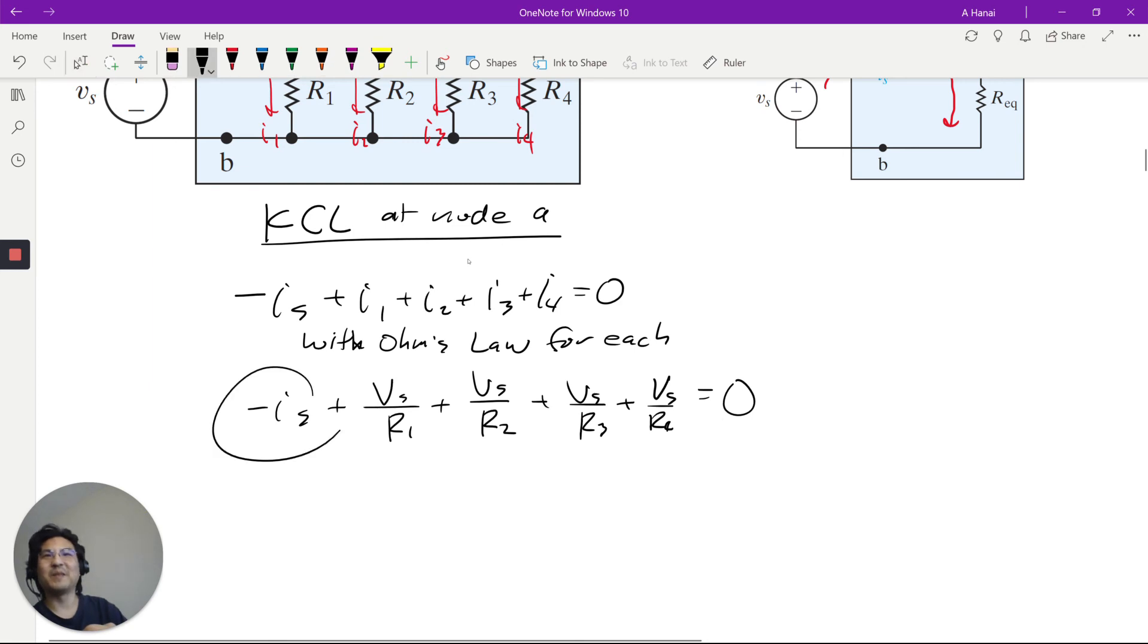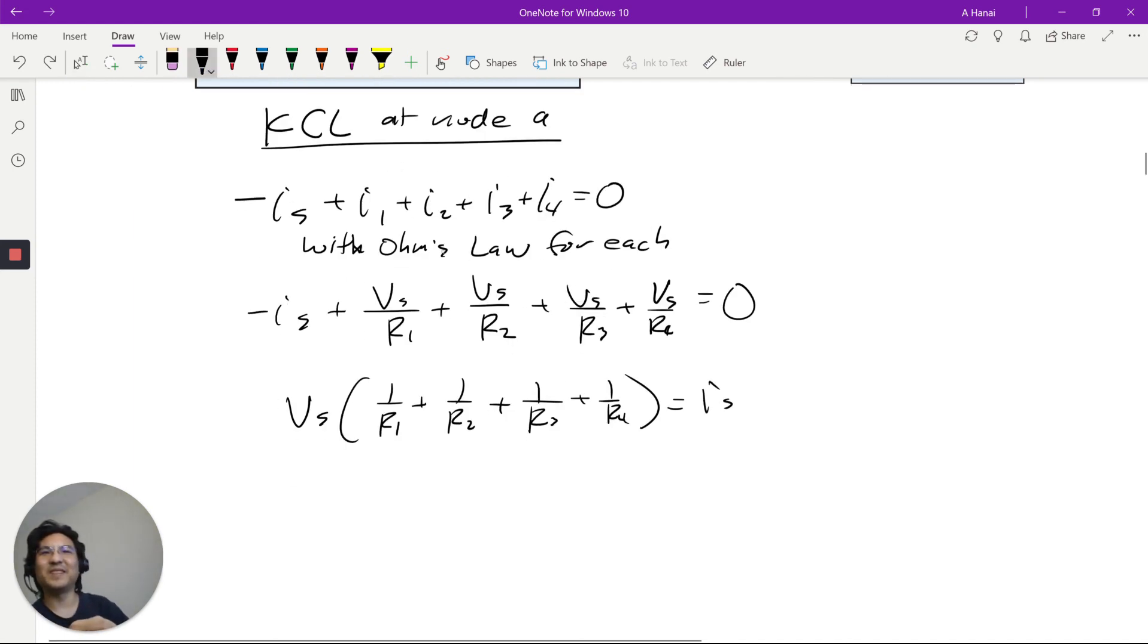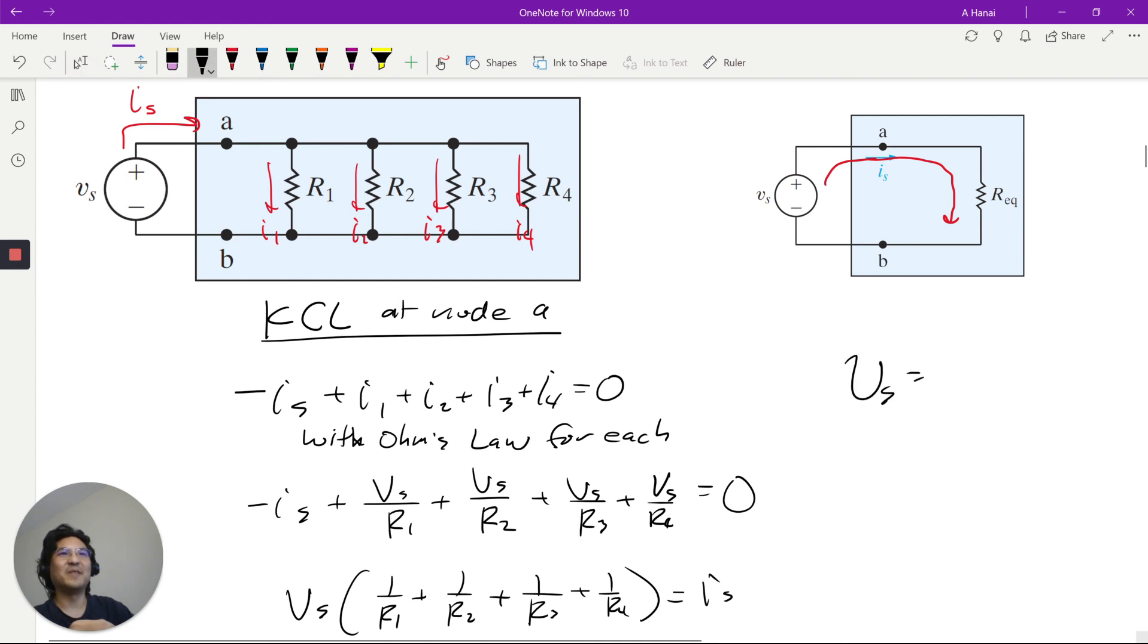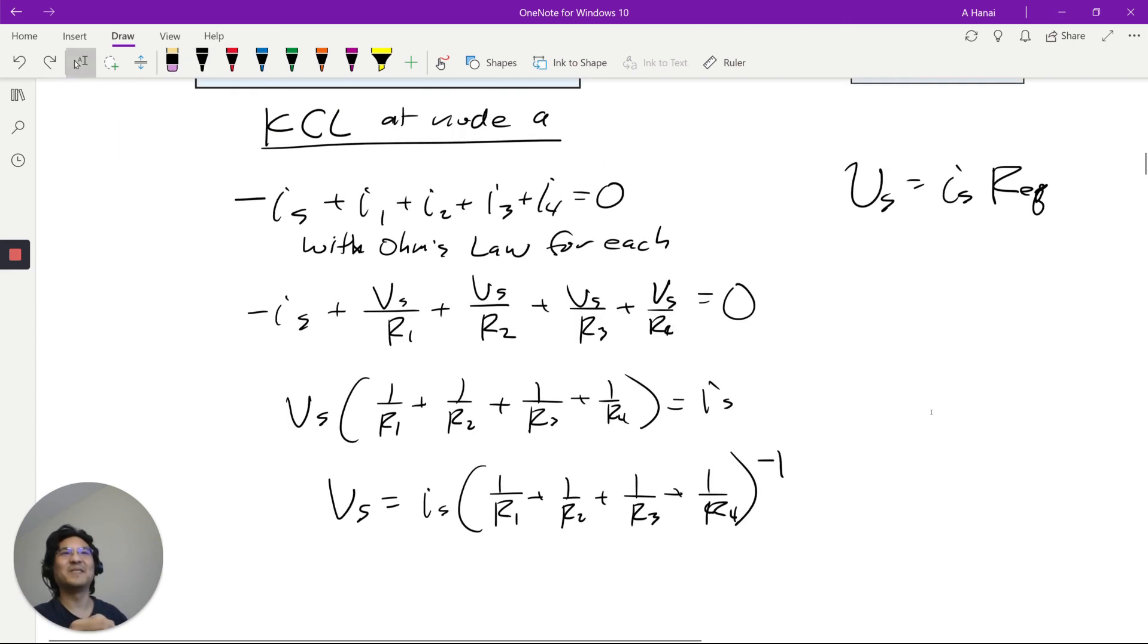So let's factor a little bit. I'm going to move this to the other side. And then let's factor Vs. And then let's just move this in the denominator. So just move it to the other side. Just take the reciprocal, right? Reciprocal. And then for this one, V equals I, R. Right, now look at this. And look at this. This is the equivalent resistance for parallel resistors.